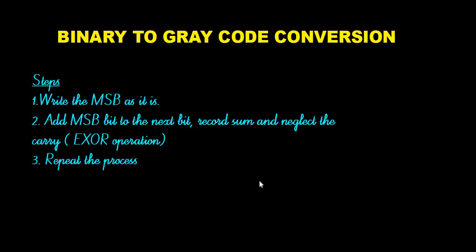In this lecture I am going to explain binary to grey code conversion. After that we will write the boolean expression for the grey code converter, and then we will implement it using logic gates. There are mainly three steps regarding binary to grey code conversion.